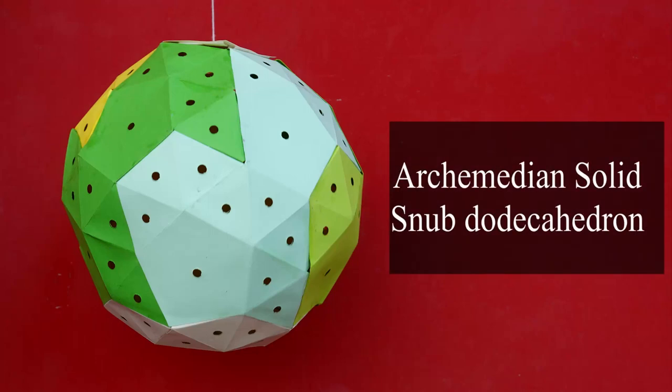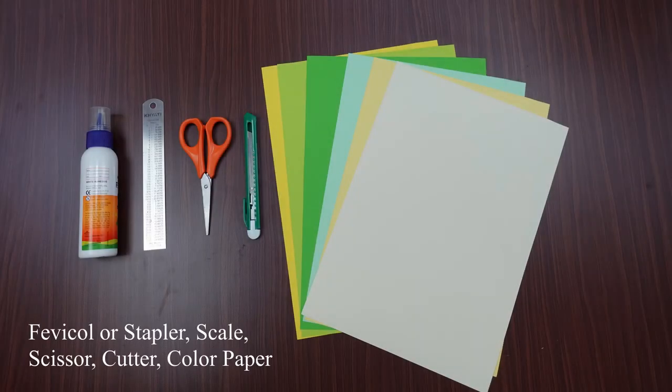Today we will learn how to make a snub dodecahedron Archimedean solid. For that we need some colored paper, scale, glue or stapler, scissors, cutter, etc.